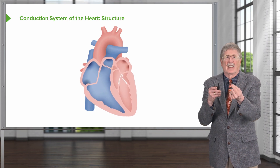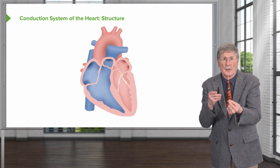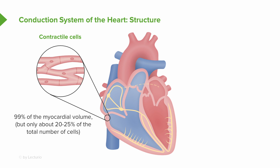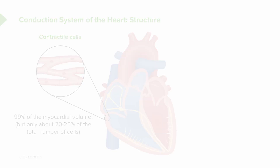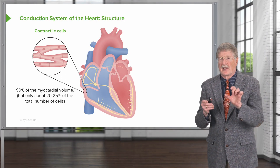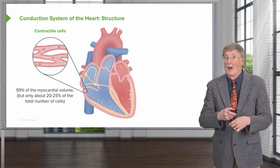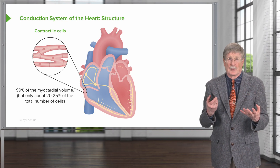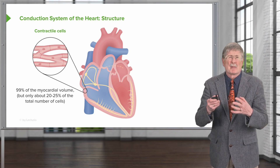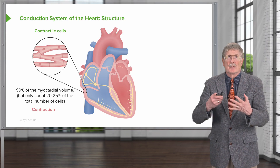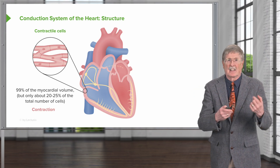There are occasionally some defects or deficits that can occur in those that can lead to arrhythmias. We're highlighting the contractile cells of the myocardium. These represent 99% of the myocardial volume. As we've discussed previously, they are only about 20% to 25% of the total number of cells. There are other endothelial cells, fibroblasts, and occasional inflammatory cells in the heart. But 99% of the myocardial volume are the contractile cells, and they're an important end-stage player in making sure we get a nice contractile wave.